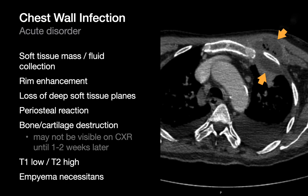Chest wall infections can present on imaging as either a focal fluid accumulation or soft tissue density mass. The normal soft tissue planes in the chest wall are often obscured and missing in the region. If the infection has been around long enough, you may also see changes in the adjacent bone, such as periosteal reaction or destruction of bone or cartilage.